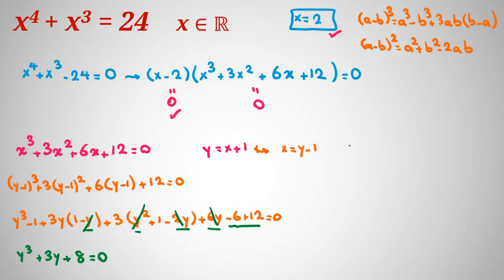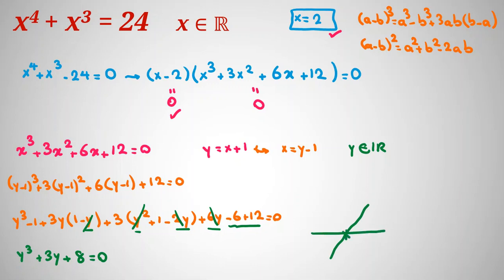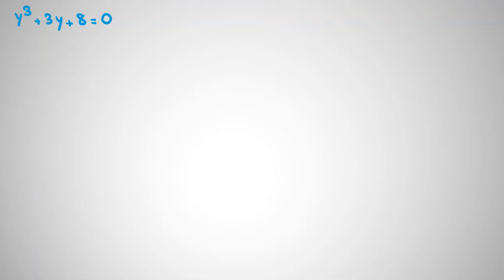Our simplified equation is y cubed plus 3y plus 8 equal to 0. Since x is real, y is also real because y equal to x plus 1. The function y cubed is increasing and 3y is also increasing, so the entire left side is a strictly increasing function, meaning there is exactly one real root. So we need to find that one real root.